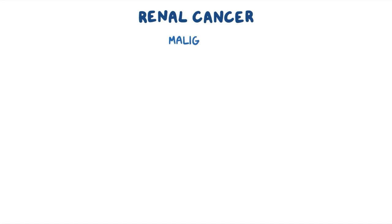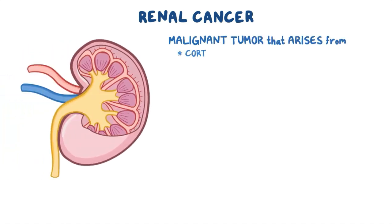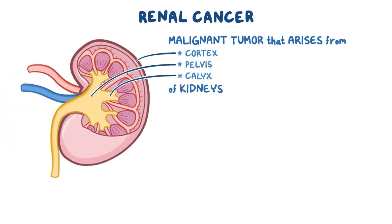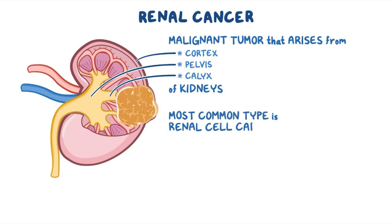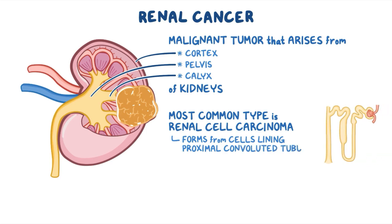Renal cancer is a malignant tumor that arises from the cortex, pelvis, or the calyces of the kidneys. The most common type of renal cancer is renal cell carcinoma, which forms from the cells lining the proximal convoluted tubules of the kidney.